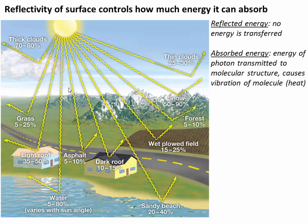Now let's think about what happens to that energy as it hits Earth's surface. It strikes the surface and depending on the material it can either be reflected or absorbed. If a photon gets reflected, no energy is transferred — it goes right back out to space. If the photon is absorbed, that energy is transferred, causing molecular vibrations and heating the object, just like in the solar water pipe example.